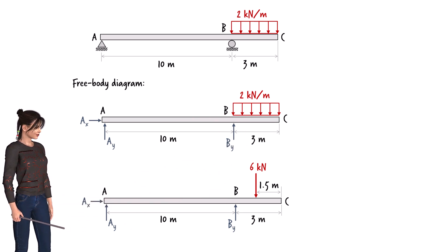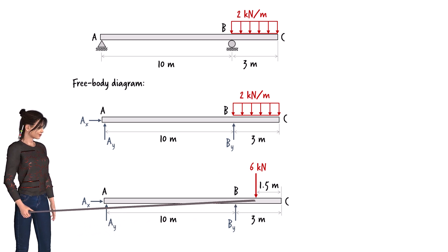The point load is placed at the geometric center of the rectangle, which is located 1.5 meters to the right of point B.